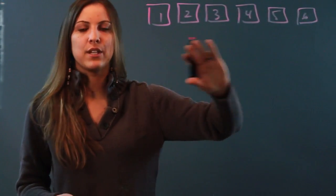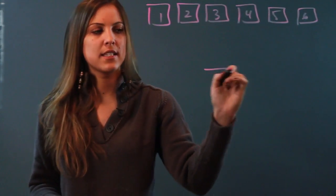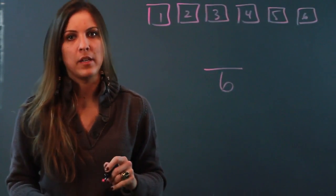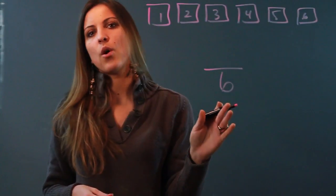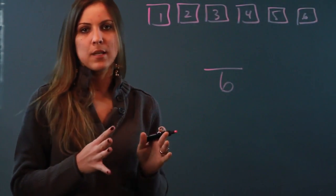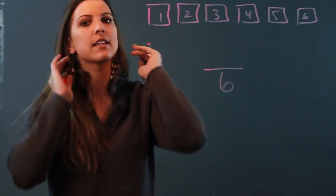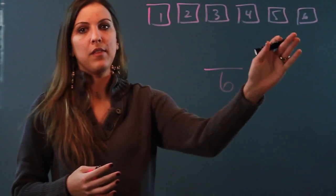So because we have 6 different possibilities, 6 is going to be my denominator. The denominator is always the total possible outcomes, and when I roll the dice there's always going to be 6 possible outcomes, namely these right here.